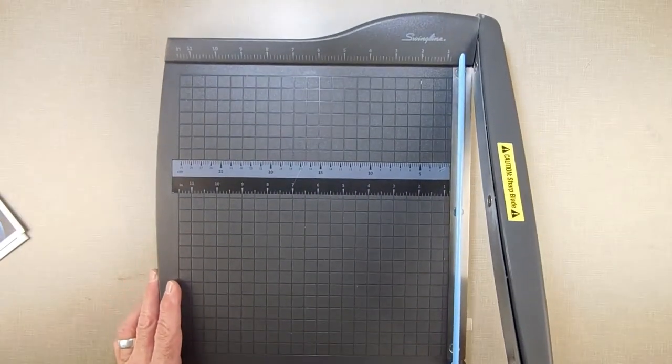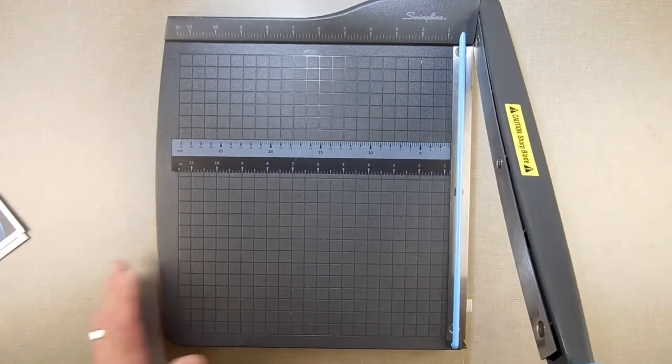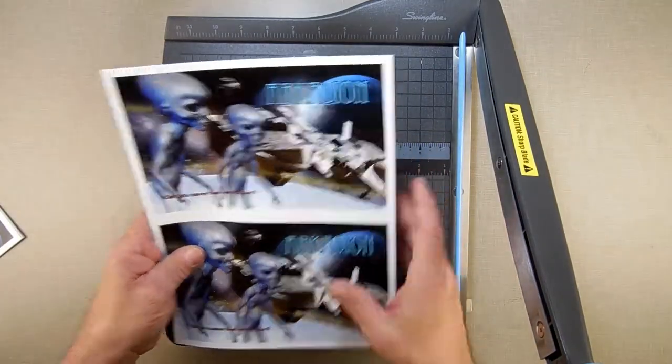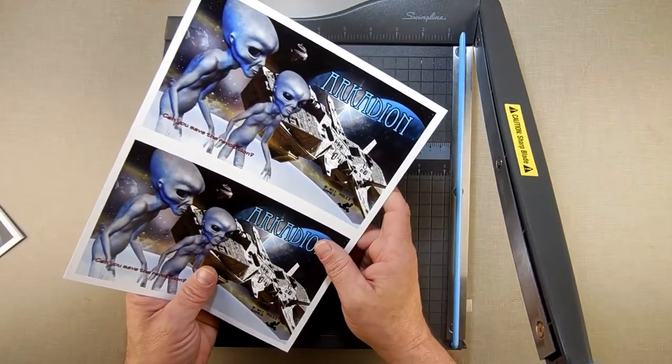All right, so what I got here is the guillotine which is a very sharp thingy. This is the cover and the inside cover for Arcadian. Arcadian is 12 pages long so that's going to be three sheets of paper. Each piece of paper has four pages.